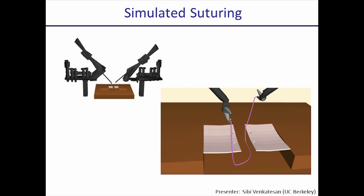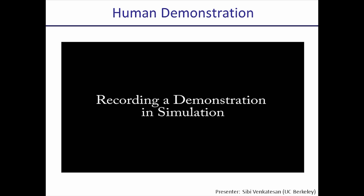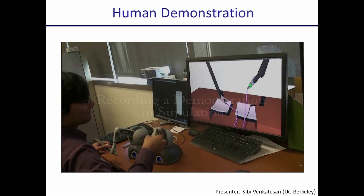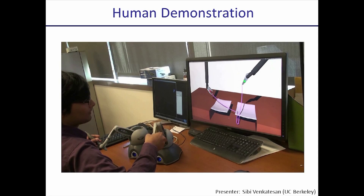Let's look at a more concrete scenario of suturing with a robot. This is a simulated setup of the Raven Surgical Robot as developed at UC Santa Cruz and University of Washington. The image on the right is the setup we're working with. Our task is to teach this robot how to perform suturing from human demonstrations. Here my colleague is recording a demonstration in simulation.